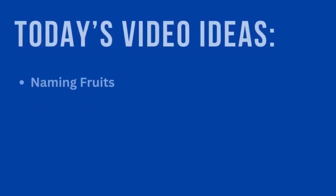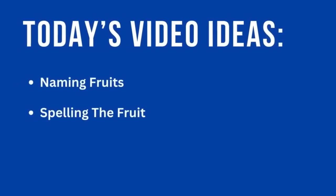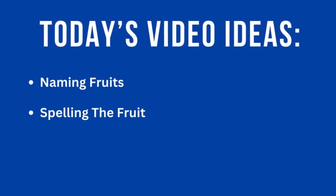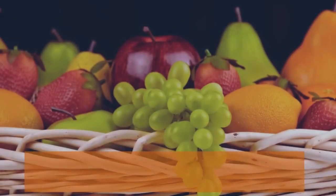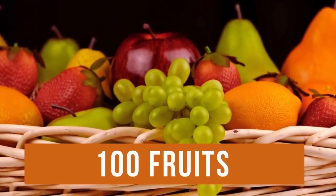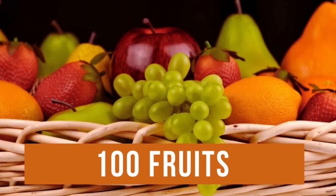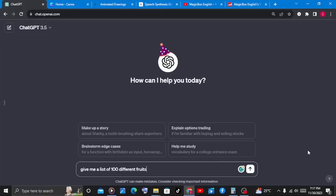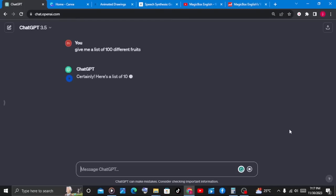In today's tutorial, we will work on naming the fruits and spelling the fruits. What we will simply do is come up with a list of 100 different types of fruits. To do this, we will go to ChatGPT and ask it this simple prompt: "Give me a list of 100 different fruits."